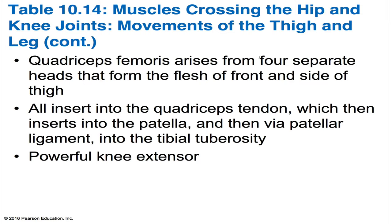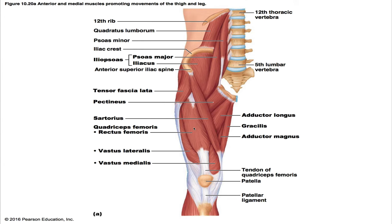The rectus femoris is the superficial muscle of the anterior thigh, running straight down and being the only quadriceps muscle to cross the hip joint. Its origin is the anterior inferior iliac spine and the superior margin of the acetabulum. Its insertion is the patella and tibial tuberosity via the patellar ligament. Its prime action is to extend the knee and flex the thigh at the hips, innervated by the femoral nerve. The vastus lateralis is the largest head of the quadriceps, forming the lateral aspect of the thigh and serving as a common intramuscular injection site. Its origin includes the greater trochanter, the intertrochanric line, and the linea aspera, with insertion also at the patella and tibial tuberosity via the patellar ligament. It extends and stabilizes the knee, innervated by the femoral nerve.